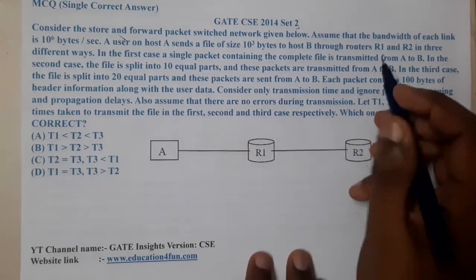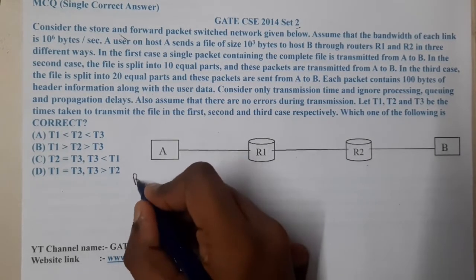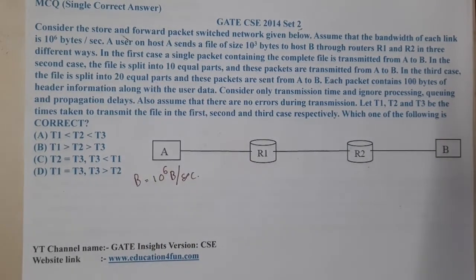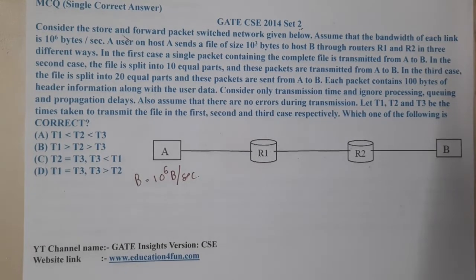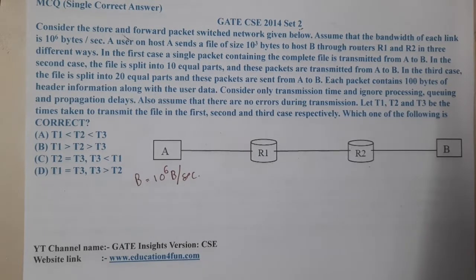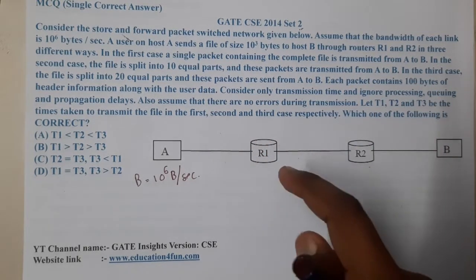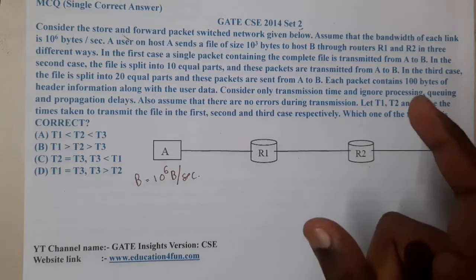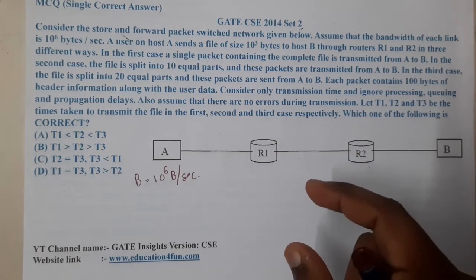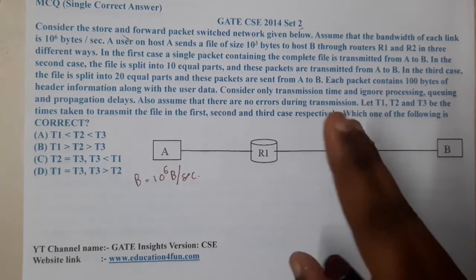Assume that the bandwidth of each link is 10^6 bytes per second. A user on host A wants to send a file of size 10^3 bytes to host B through router R1 and router R2, in three different ways. In the first case, a single packet containing the complete file is transmitted from A to B. In case 2, the file is split into 10 equal parts. In the third case, the file is split into 20 equal parts.